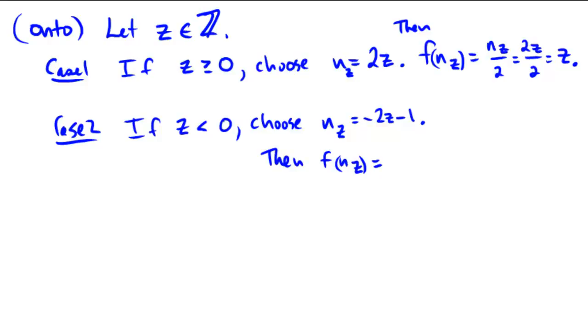Then f(n_z) would be equal to—since it's definitely odd, it'll be on the bottom rule—negative (negative 2z minus 1) plus 1, all over 2, which would be negative of... those will cancel out, so you get negative of negative 2z over 2. The 2s cancel out, the negatives cancel out, and lo and behold, again we get z.